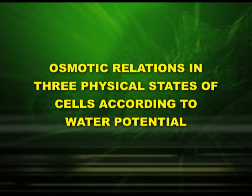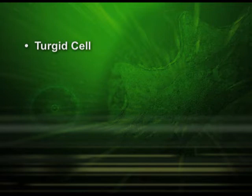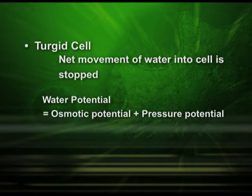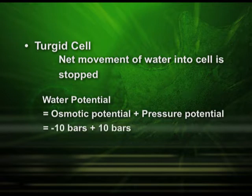Let us first see the case of a turgid cell. The net movement of water into the cell is stopped. In the turgid cell, the water potential is equal to osmotic potential plus pressure potential, that is equal to minus 10 bars plus 10 bars, which equals 0 bars.